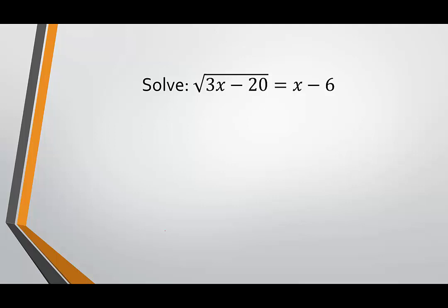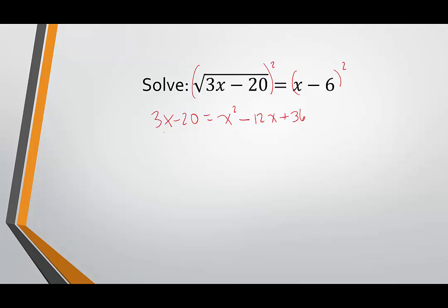In another example, we want to make sure the radical is by itself. If there were a plus 6 on the same side, we'd subtract 6 from both sides first — because if it's not isolated and you square that side, you'd have to apply the binomial square to two terms, which gets complicated. After squaring, we get 3x minus 20 equals x squared minus 12x plus 36. Setting it equal to 0 by subtracting 3x and adding 20 gives 0 equals x squared minus 15x plus 56.